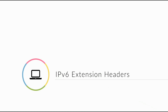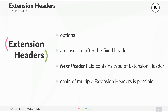If you have a next header field there must be a next header, and a possible next header is an extension header. These headers are optional and they are inserted after the fixed header. The next header field contains the type of the different extension headers that is used, and it is possible to chain multiple extension headers.